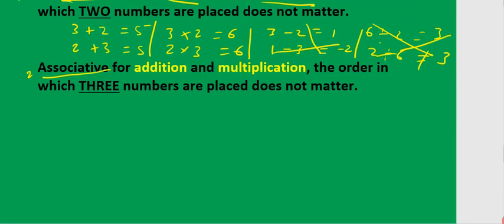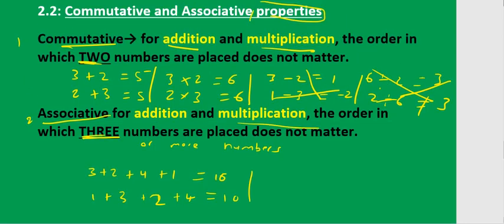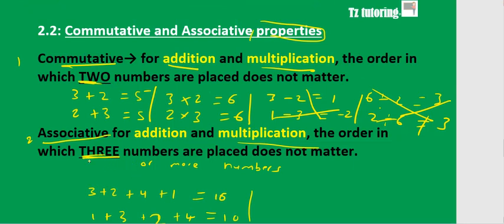The associative property is similar to the commutative property, but it applies to three or more numbers. The rule is the same: the order in which you add doesn't matter. For example, 3 plus 2 plus 4 plus 1 is 10, and rearranging them still gives 10. For multiplication, the order of three or more numbers doesn't matter either. Both properties only work for addition and multiplication, not for subtraction and division.